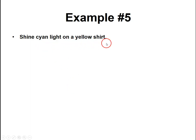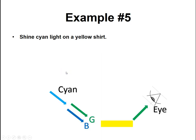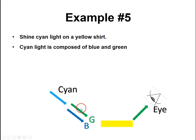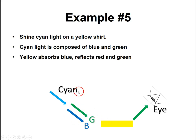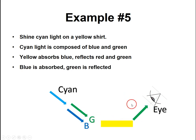One more: cyan light onto a yellow shirt. Cyan is composed of both blue and green, so you can imagine shining blue and green onto your yellow shirt. Yellow is going to absorb that blue and wants to reflect red and green — but there is no red. So the only thing it can reflect is green. Green gets reflected into your eyes, and your brain interprets that as green.